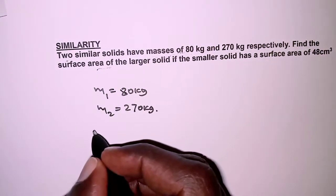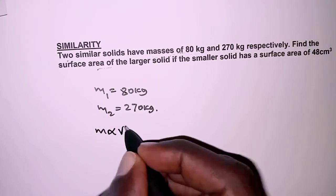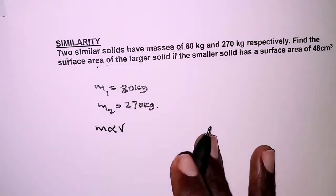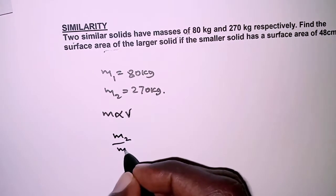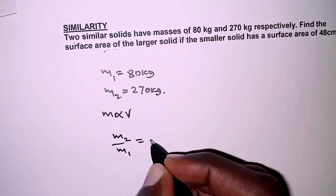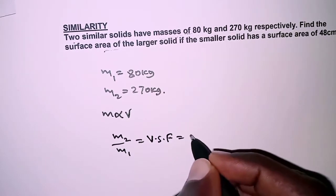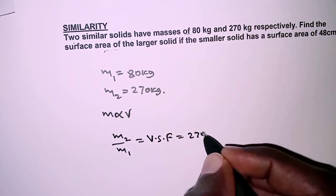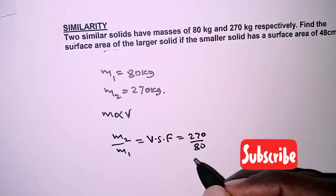We are going to build on the background that mass varies directly as volume. So the ratio of the masses, mass 2 over mass 1, will give us the volume scale factor, and that is 270 over 80.